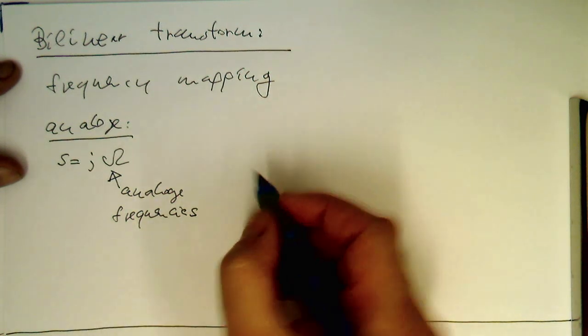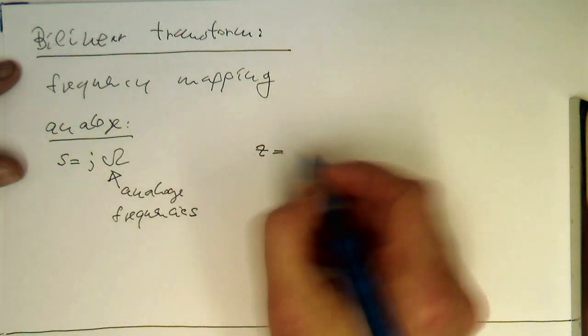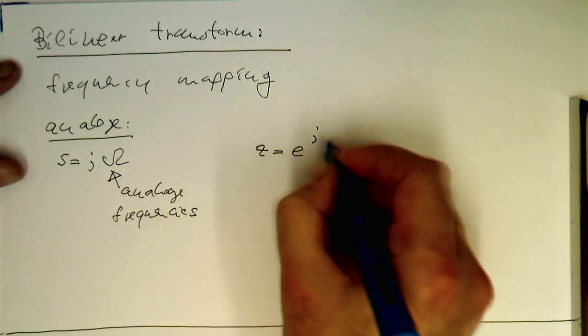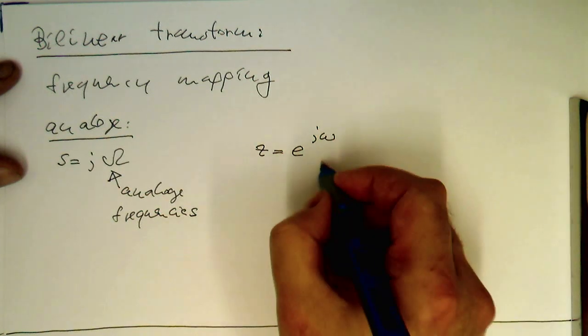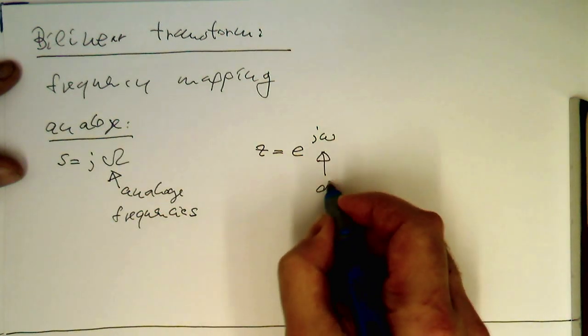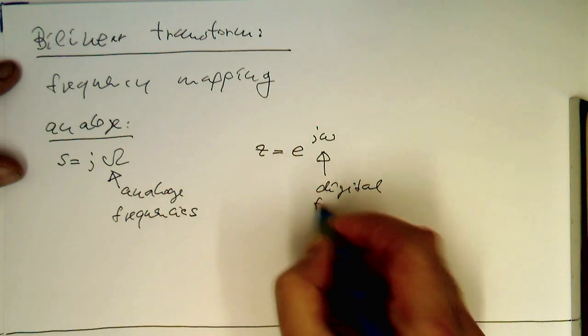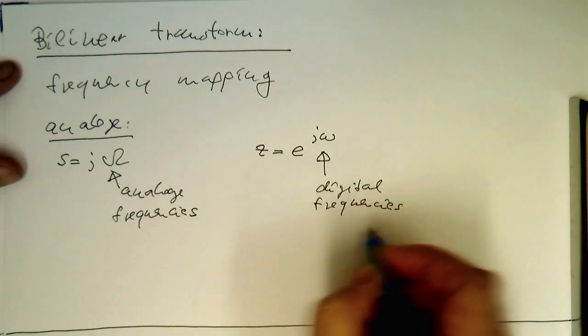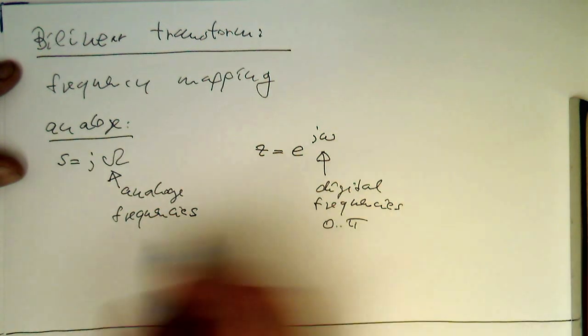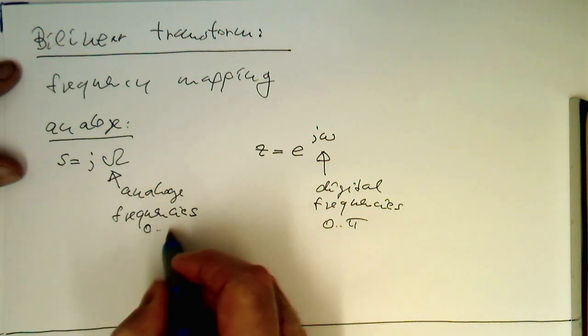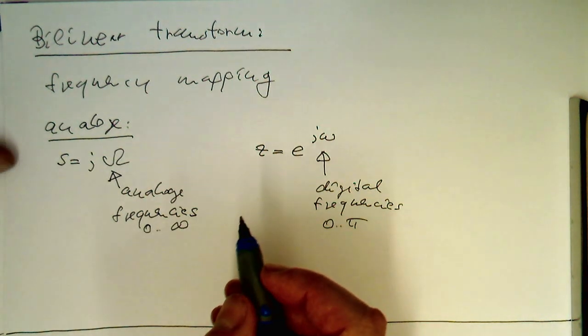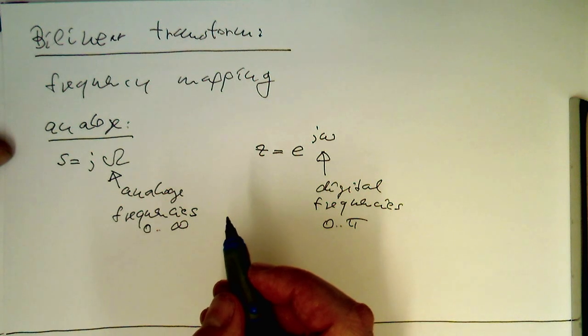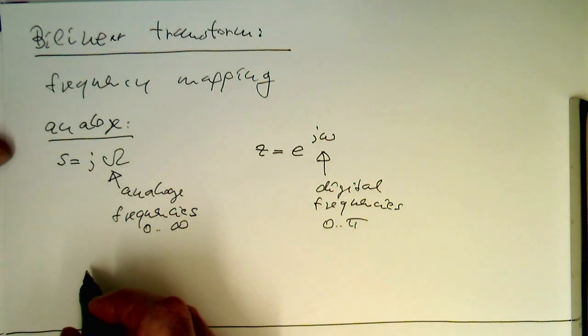And in the sampled domain, we know that is e to j omega. So these are our digital frequencies between zero and pi and the analog frequencies running from zero to infinity. So that's really the case. And it's very simple to see. So we just write out our function with that.